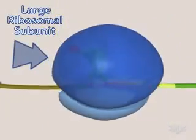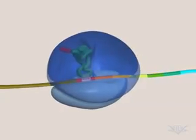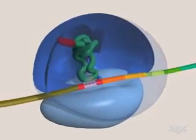The large subunit of the ribosome now binds to create the peptidyl, or P-site, and the aminoacyl, or A-site.